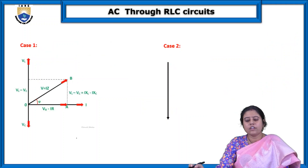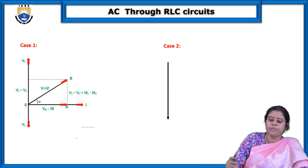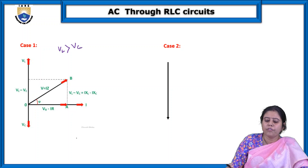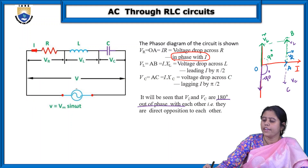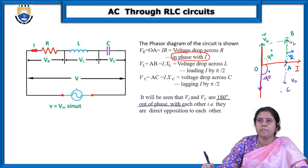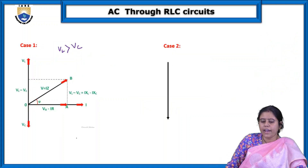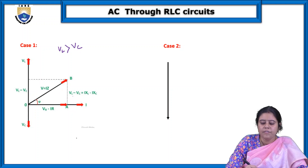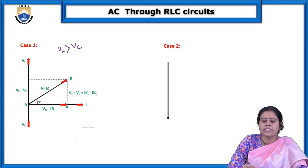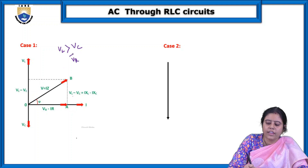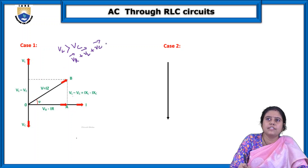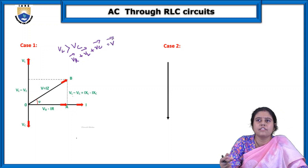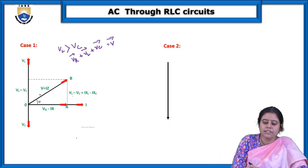There are two cases. Case 1: VL is greater than VC. In this case, VL minus VC is in the positive quadrant. The green VL vector will be longer. So we draw VL minus VC in the positive quadrant with Vr, and V = IZ. Since Vr + VL + VC = V, we get this resultant vector V.